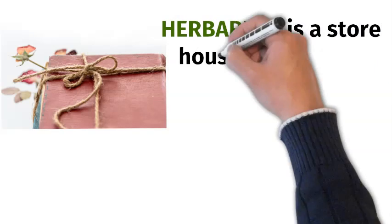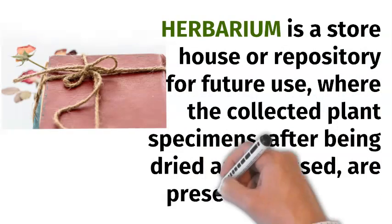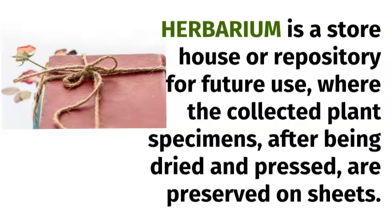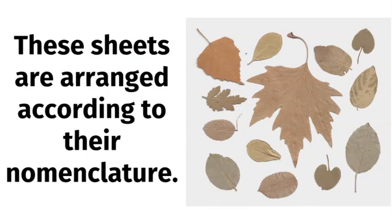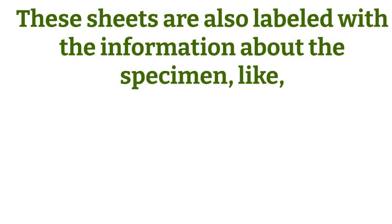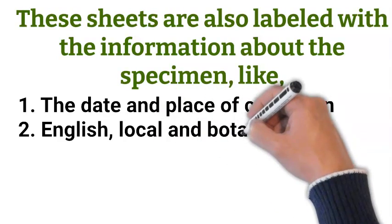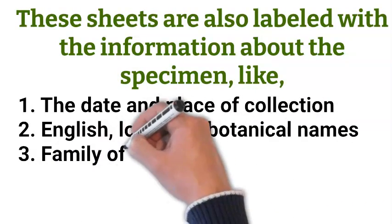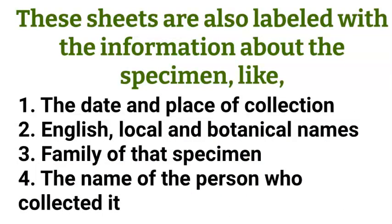Herbarium is a storehouse or repository for future use, where the collected plant specimens after being dried and pressed are preserved on sheets. These sheets are arranged according to their nomenclature, and are labeled with information about the specimen like: the date and place of collection, English, local and botanical names, family of that specimen, and the name of the person who collected it.